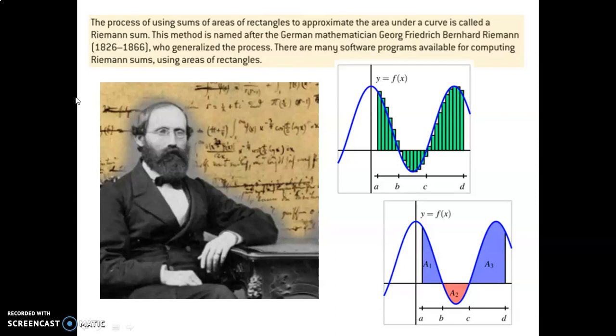To begin today, we're going to talk about a little history about integrals. The process of using sums of areas of rectangles to approximate the area under a curve is called a Riemann sum. We've been talking about this idea of making rectangles under a curve and using the areas of all those rectangles to approximate the area under the curve. It's called a Riemann sum because it's named after the German mathematician Georg Friedrich Bernhard Riemann. He lived during this time period and he generalized this process of using rectangles to find area.